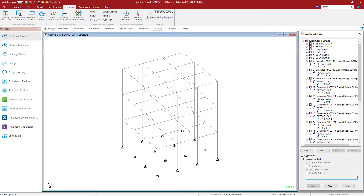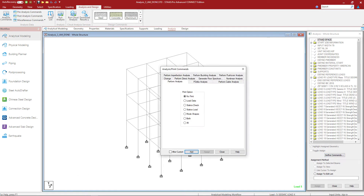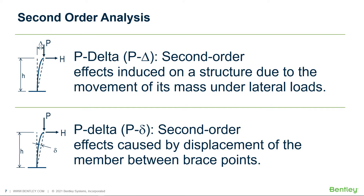Now I'm ready to move on to the next step in my workflow, which is to invoke the P-Delta analysis command. To start that process, click on the Analysis tab in the Workflow Page Control area, and then click on your Define Commands option. In specifying a P-Delta analysis, the program has the ability to include both P-Delta and P-delta effects. P-Delta effects are your second order effects induced on a structure due to the movement of its mass under lateral loads, and P-delta effects are the second order effects caused by displacement of the member between the bracing points.